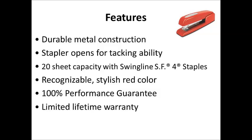The features of this particular stapler are that it is made of metal, which differentiates it from staplers made of high-impact plastic. The stapler can be opened up to 180 degrees so you can tack things onto a bulletin board. Those two features might make you choose this particular stapler over others. It has a 20-sheet capacity with a certain type of staple — so if you knew you had to staple 30-sheet booklets together, you'd look for something bigger, but for 14 pages, this will work.